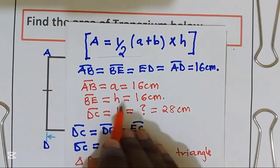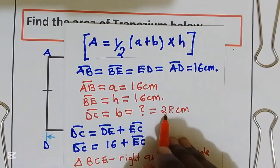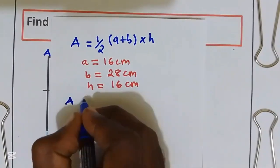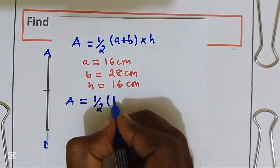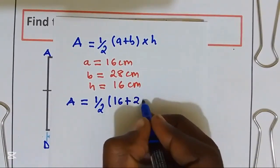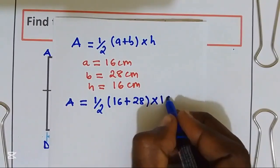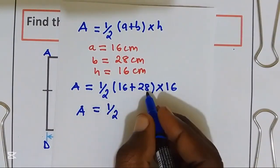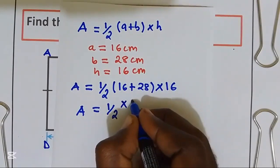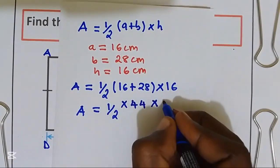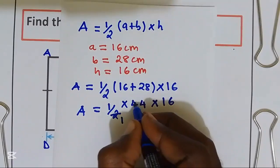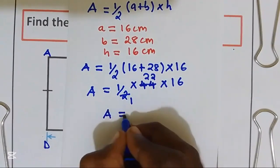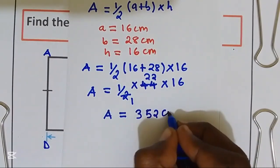We now have: A equals 16 centimeters, height equals 16 centimeters, and B equals 28 centimeters. Using the area formula: area equals one half times (16 plus 28) multiplied by 16. That gives us one half times 44 times 16. Dividing by 2: 22 times 16. Our area equals 352 centimeters squared.